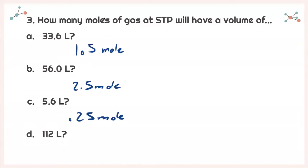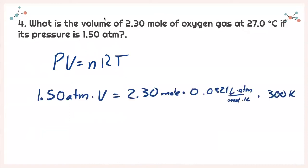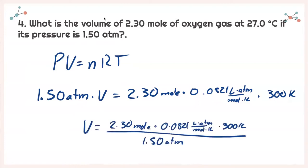For D, 112 liters: that's 5 times as much as 22.4, so we get 5 moles. Next, number four asks: what is the volume of 2.30 moles of oxygen gas at 27.0°C if its pressure is 1.5 atm? I write PV = nRT. Temperature of 27.0°C needs to be converted to Kelvin — that gives 300 K. Plugging in: 1.50 atm × V = 2.30 mol × 0.0821 L·atm/(mol·K) × 300 K. Solving for V, I get a volume of 37.8 liters.